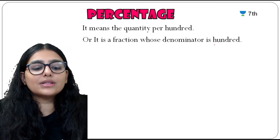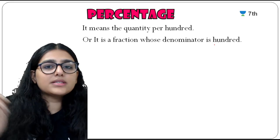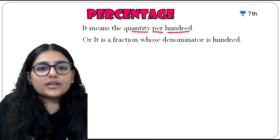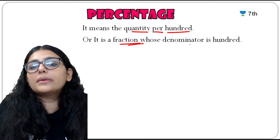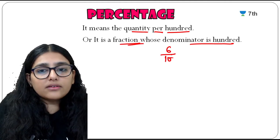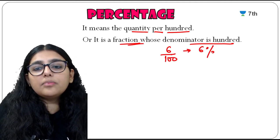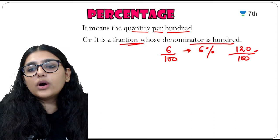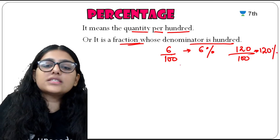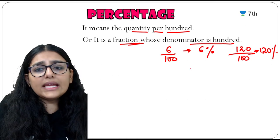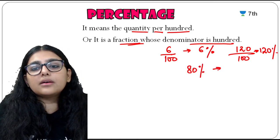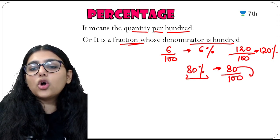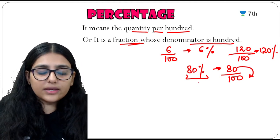Moving on to percentage. Percentage means quantity per 100, and it is a fraction whose denominator is 100. For example, 6/100 is 6%, and 120/100 is 120%. If you have 80% marks, that means 80 marks out of 100.